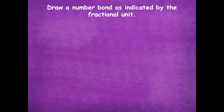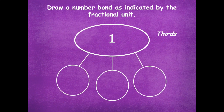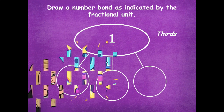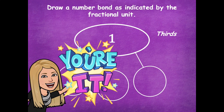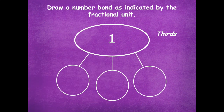Let's take a look at another one. We're going to draw the number bond as indicated by the fractional unit — I use that fancy word 'indicated' because that's what it shows on your problem set, so I want you to be familiar with that. It's going to tell you a fractional unit labeled on your problem set. Here is my number bond and thirds is your fractional unit. Pause the video, write the unit fractions that represent one whole in thirds. All right — we have one third, one third, and one third, so we have a total of three thirds.